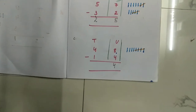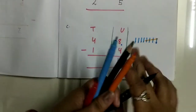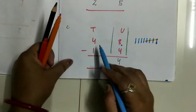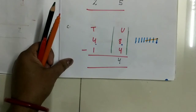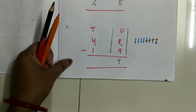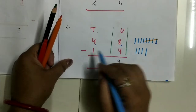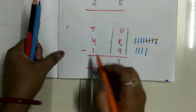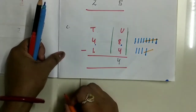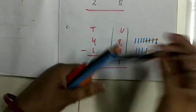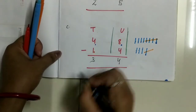Now come to the tens column. In the tens column what we have? 4. So what you have to do? Draw 4 lines: 1, 2, 3, 4. From 4 lines you have to take away only 1, so cut 1. Now how many lines are remaining? Count it: 1, 2, 3.